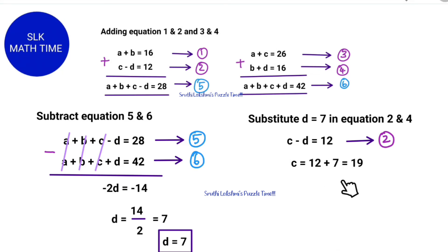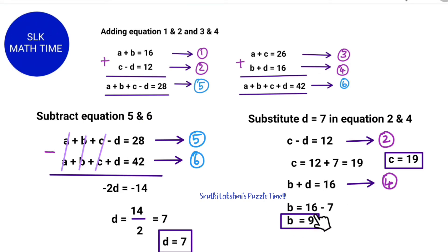So here we do B plus D which is 16 and this is the fourth equation. So we do B equals 16 minus 7 which equals 9. So we know that B equals 9.